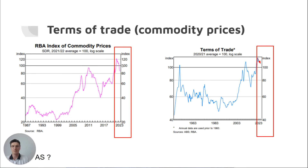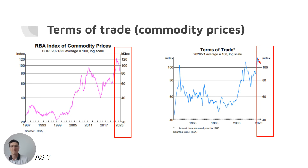In terms of the terms of trade, we have a decrease in commodity prices which is leading to a decrease in the terms of trade. If you wanted to think about the terms of trade as an AS factor, you could say import prices have been increasing as well — so that's also a negative AS factor. Remember, it's commodity prices that drive the terms of trade in Australia.